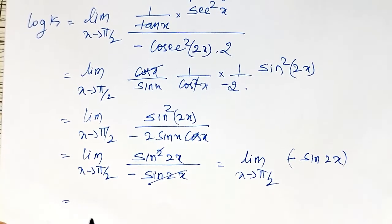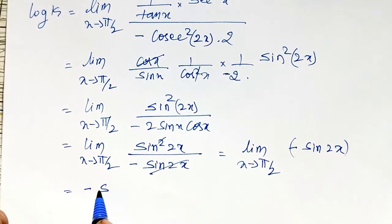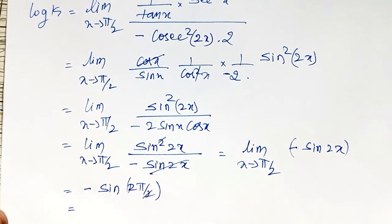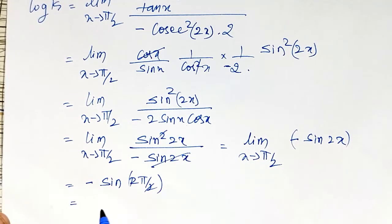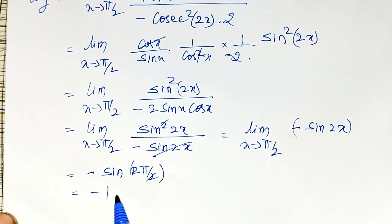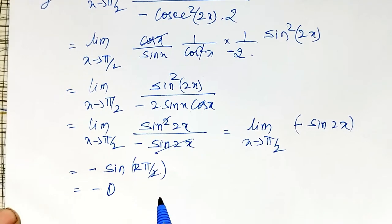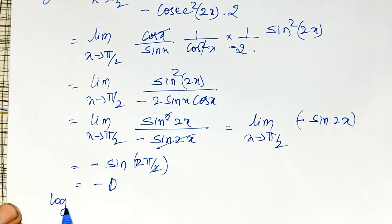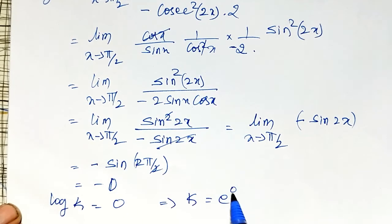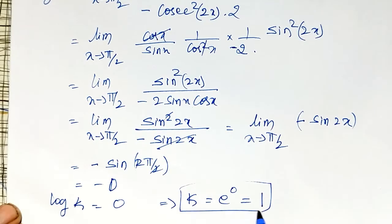Substituting x = π/2: it is −sin(2·π/2). The 2's cancel, giving −sin(π), and sin(π) = 0. Therefore log k = 0, which implies k = e^0 = 1. Therefore the limiting value is 1.